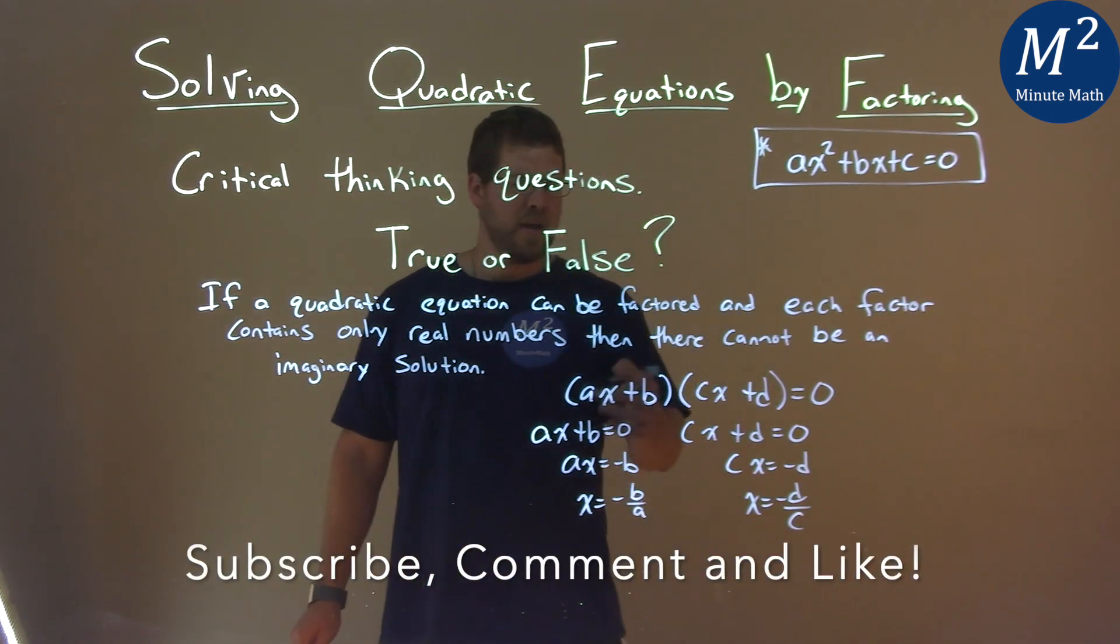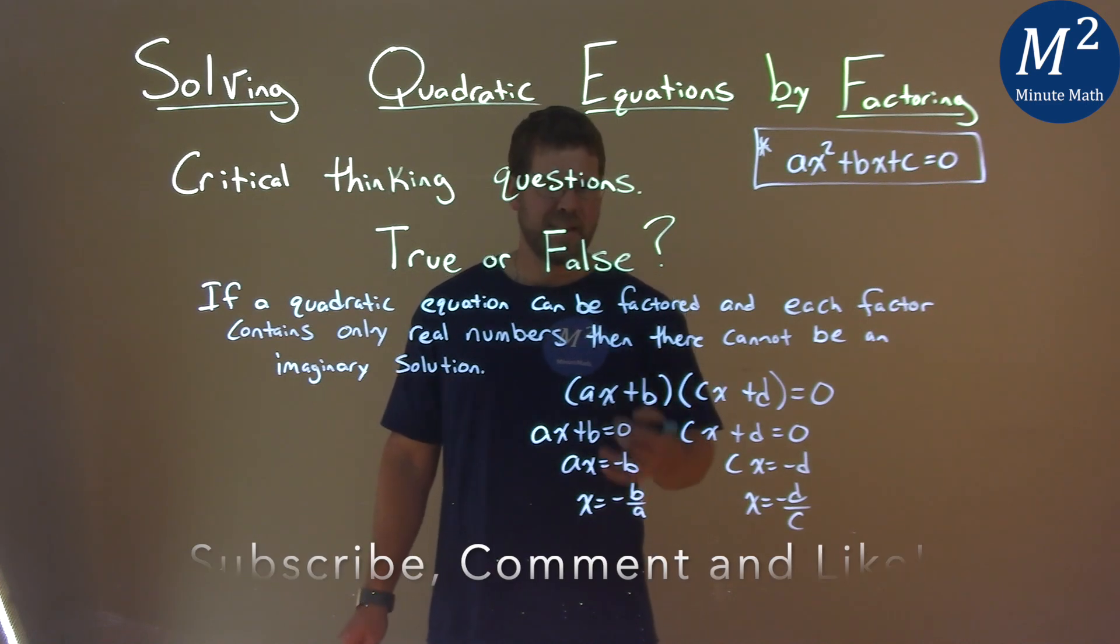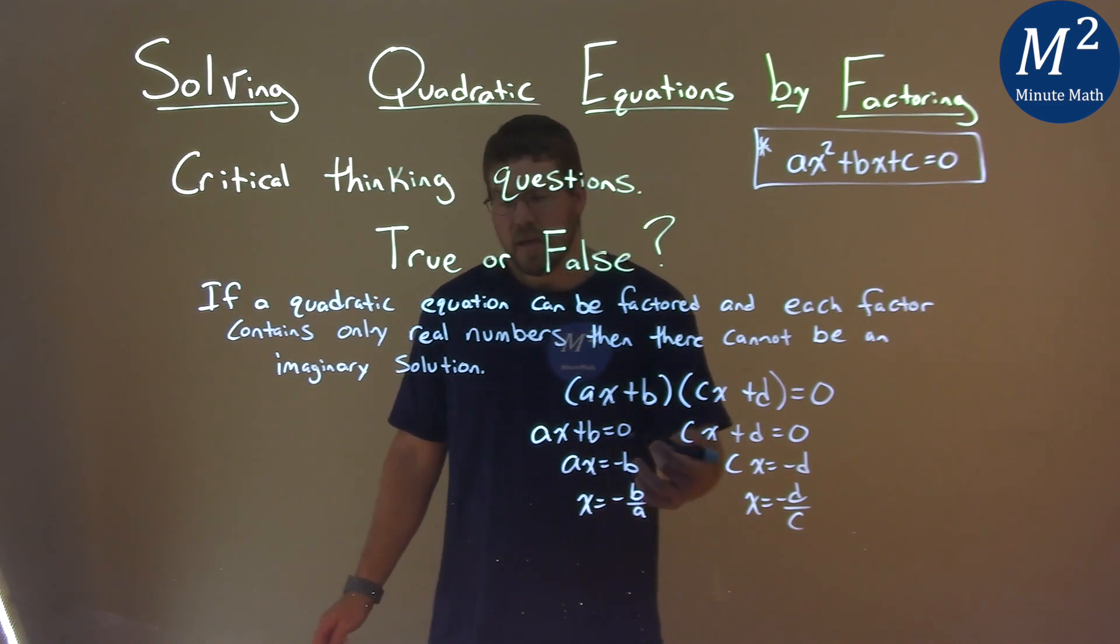Well, if A, B, C, and D are all real numbers, then negative B divided by A must also be a real number, and negative D divided by C must also be a real number. We can't multiply or divide any two real numbers to get an imaginary. It must be real.